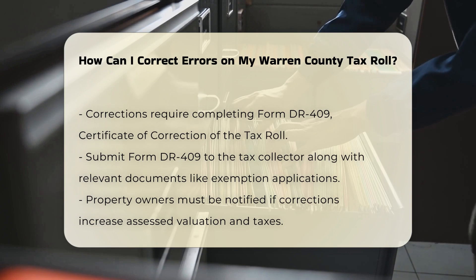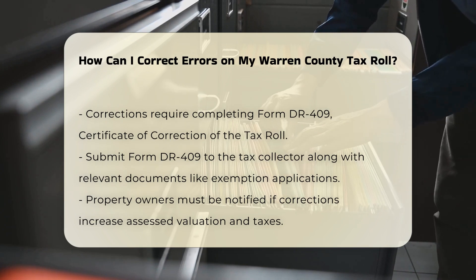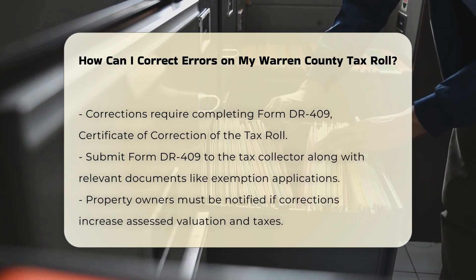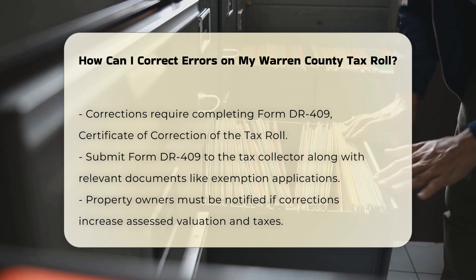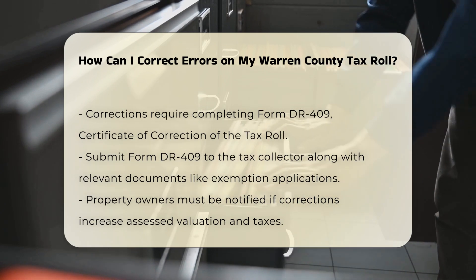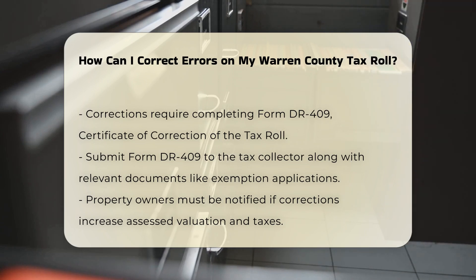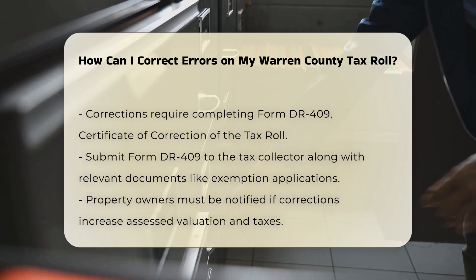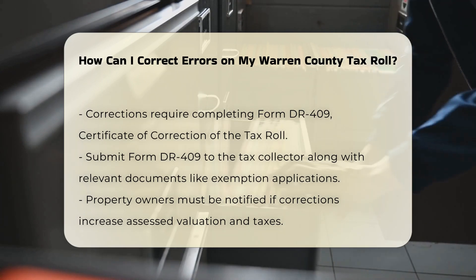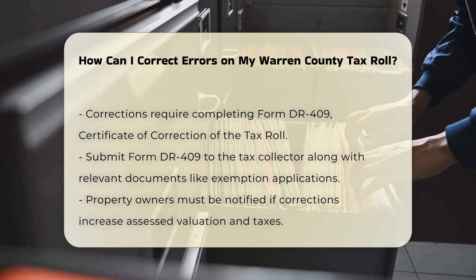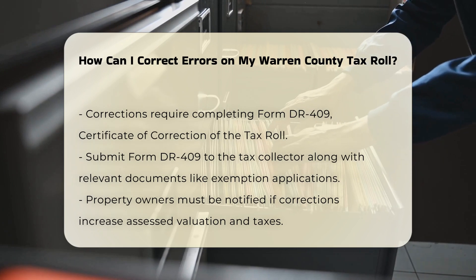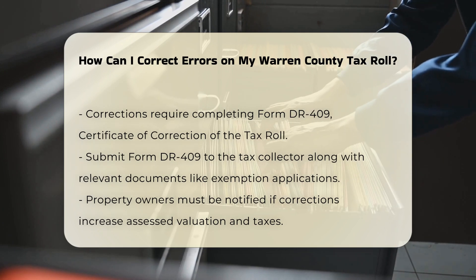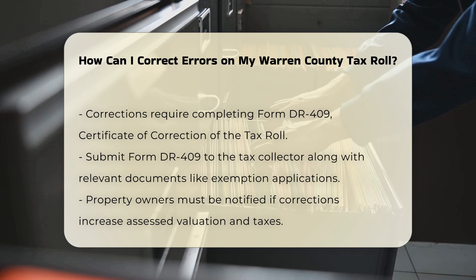Procedure for correction: for every change made to an assessment roll, the property appraiser must complete a Form DR-409, Certificate of Correction of the Tax Roll. This form must be delivered to the tax collector along with any relevant documents, such as value adjustment board orders or exemption applications.